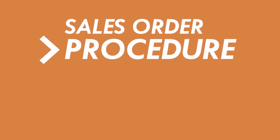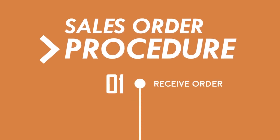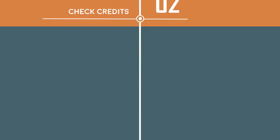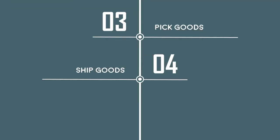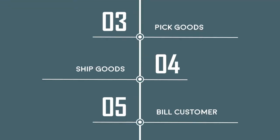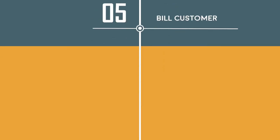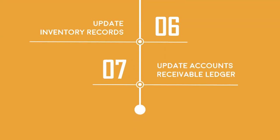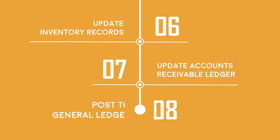The sales order procedure has eight steps, namely: receiving the order, checking credits, picking goods to be shipped, shipping the goods, billing the customer, updating inventory records, updating the accounts receivable ledger, and posting it to the general ledger.